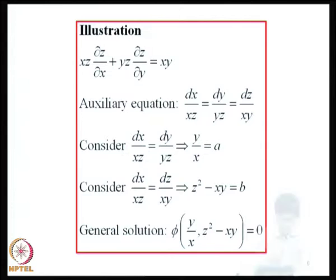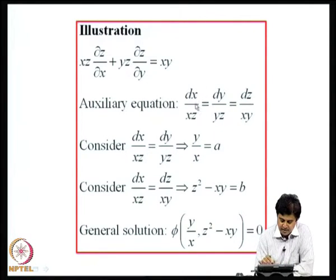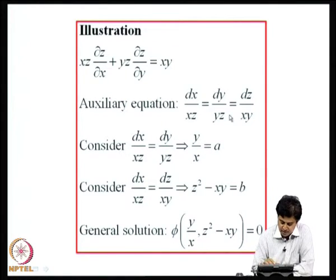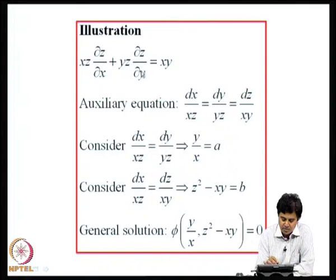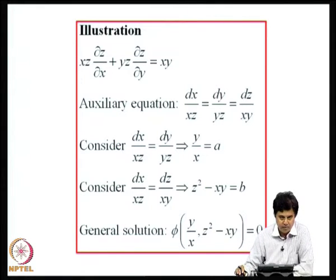As a quick example, consider xz(∂z/∂x) + yz(∂z/∂y) = xy. The auxiliary equations are dx/(xz) = dy/(yz) = dz/(xy). The first two equations yield y/x = constant, and combining the first and third gives z² - xy = B. Therefore, the general solution is φ(y/x, z² - xy) = 0. This can be verified, though the details are left as an exercise.